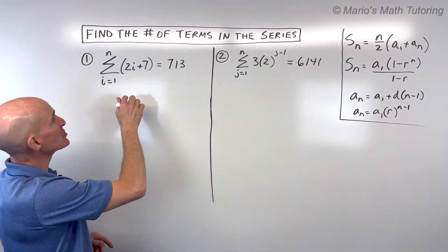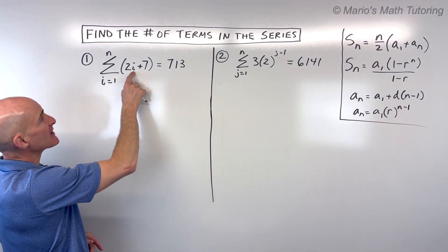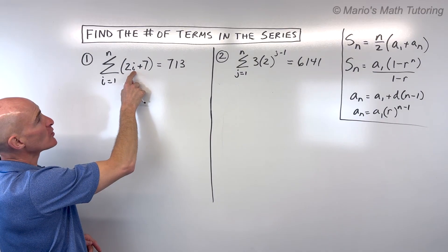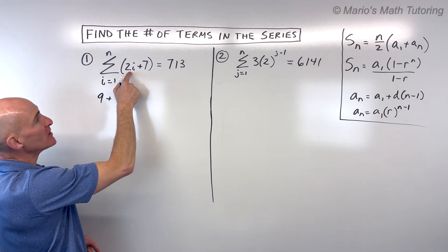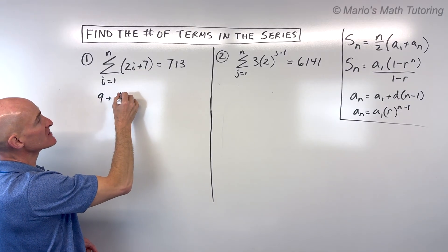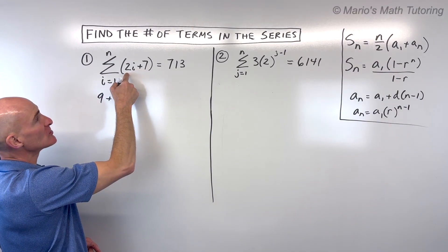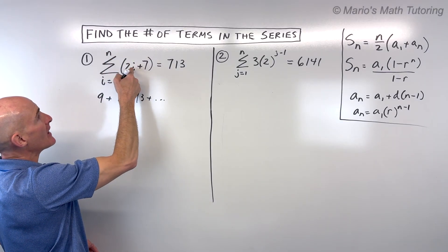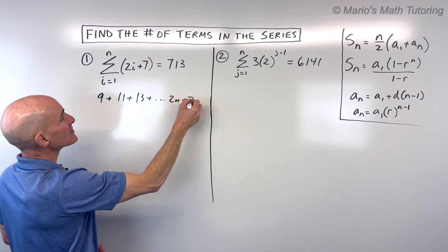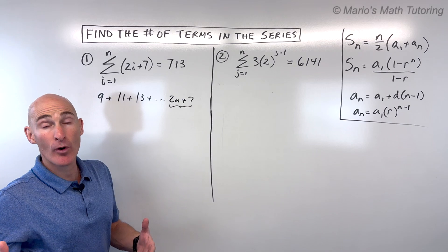But if you're not sure, what you can do is we can plug in this index here. So if I put in 1, 2 times 1 is 2 plus 7 is 9. That's our first term. If I put 2 in, 2 times 2 is 4 plus 7 is 11. If I put in 3, 2 times 3 is 6 plus 7 is 13. And if I put in n, that gives us 2n plus 7. That represents our nth term or our last term.